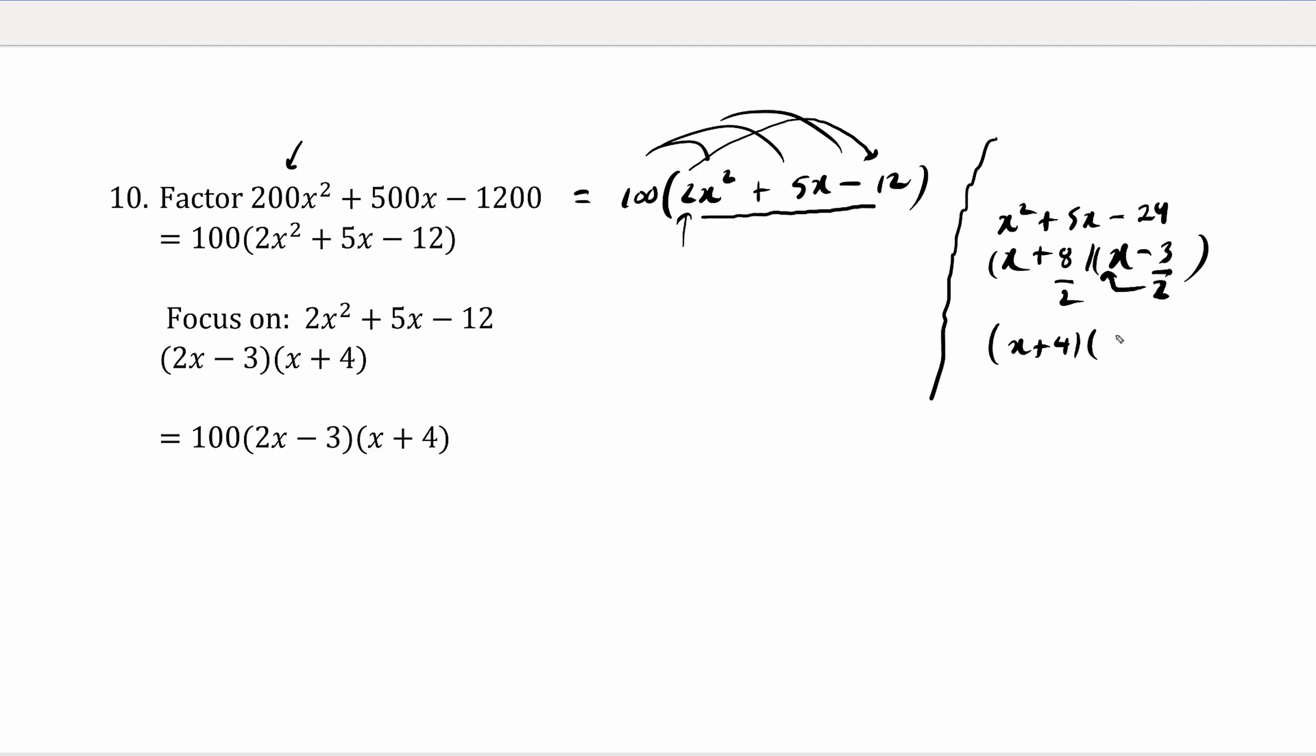The denominator goes in front of the x. So we have 2x minus 3. This here is the factored form of this here.